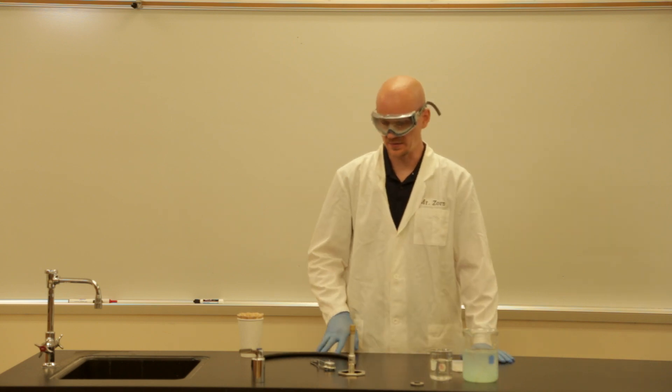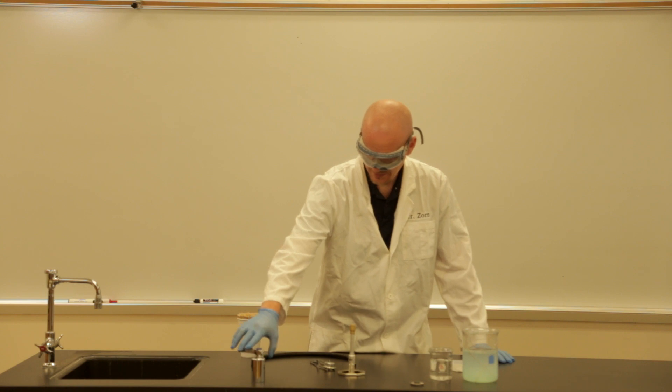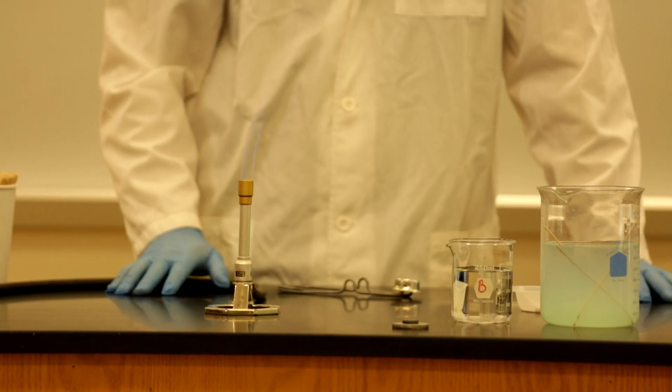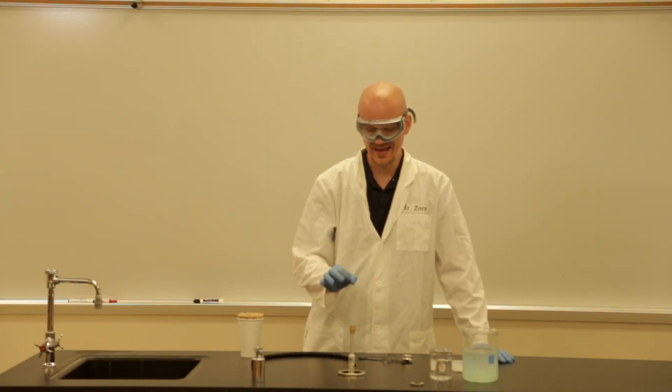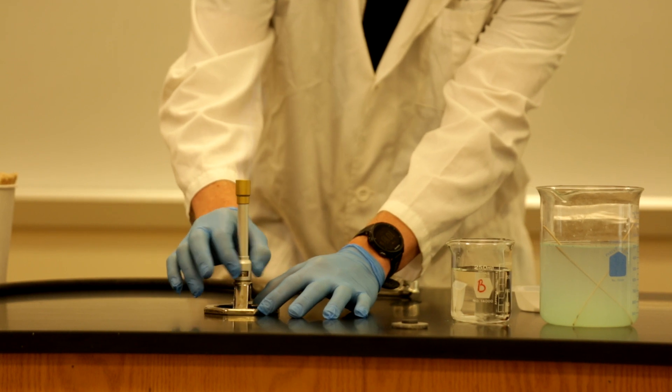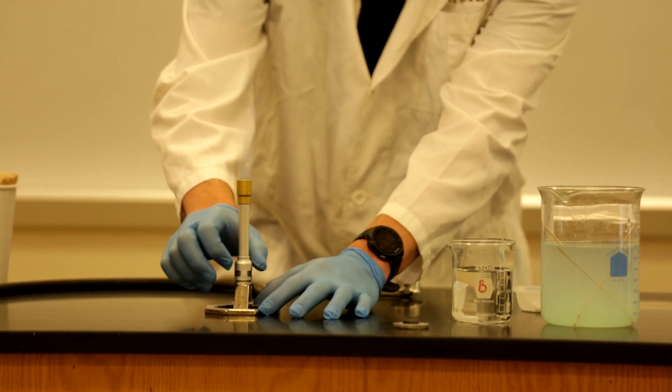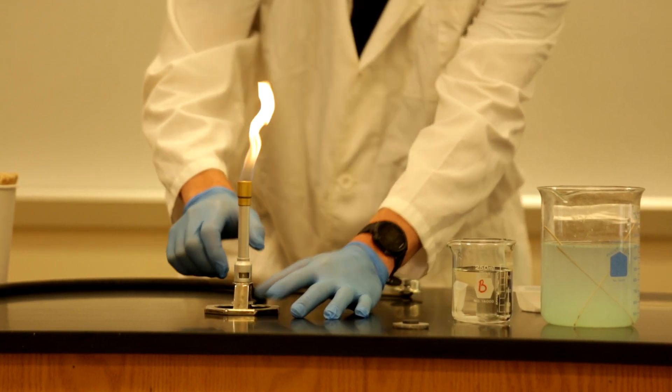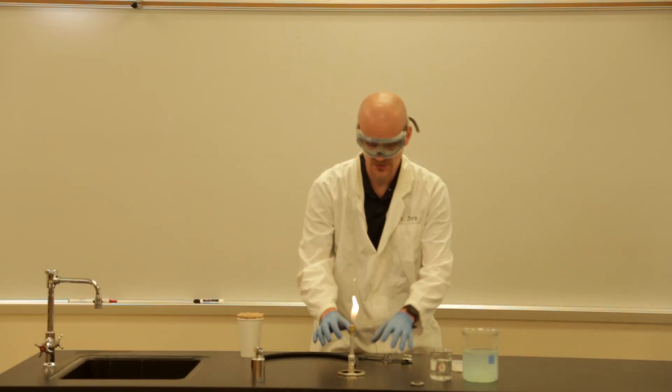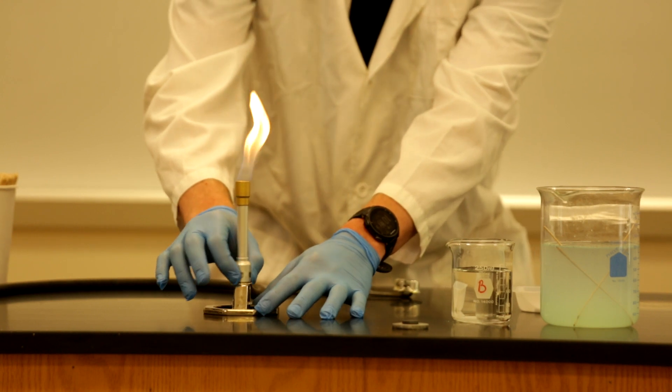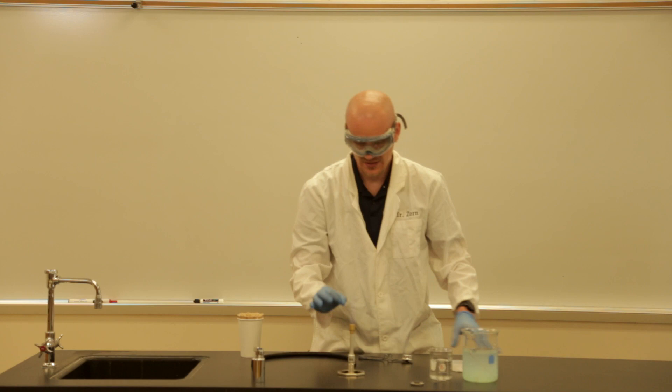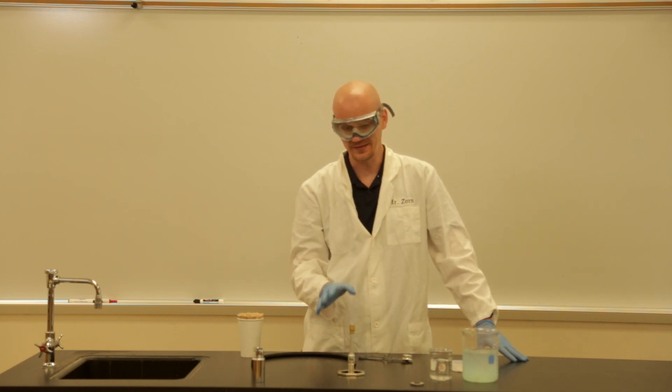Let's begin by lighting our Bunsen burner. I'm going to go ahead and turn on my gas and then using the striker I'm going to come up and light my burner. You want to make sure that you have a nice blue flame when you light this. So you can adjust the chimney. If you turn your Bunsen burner on and notice that you have a yellow flame like this, that just means that your mixture of oxygen and gas isn't quite right. So go ahead and adjust your burner until you get a nice blue flame like that. It's a very satisfying sound when you have it lit correctly.